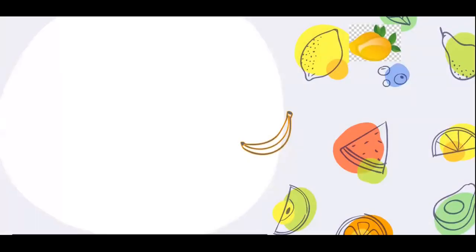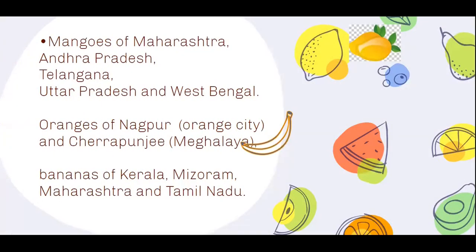For mangoes, the major producing states are Maharashtra, Andhra Pradesh, Telangana, Uttar Pradesh, and West Bengal. When we look at oranges, Nagpur is a major producer and is known as the orange city for its significant orange production. Cherrapunji in Meghalaya is another place producing oranges.